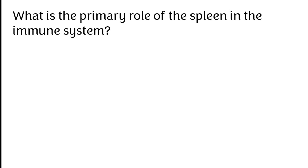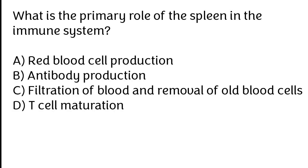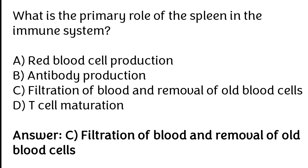What is the primary role of the spleen in the immune system? Red blood cell production, antibody production, filtration of blood and removal of old blood cells, T-cell maturation. The correct answer is option C. The primary role of the spleen in the immune system is filtration of blood and removal of old blood cells.